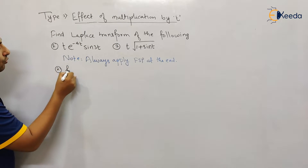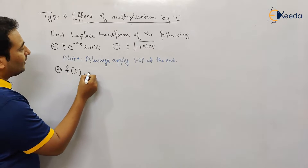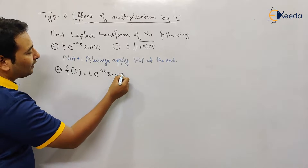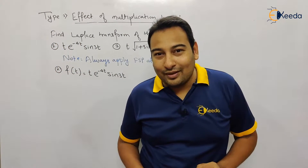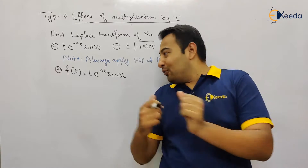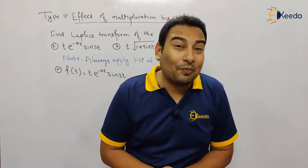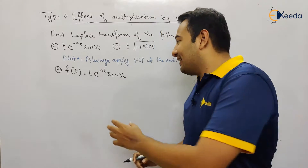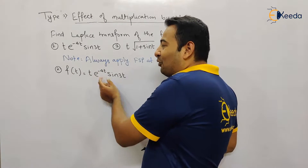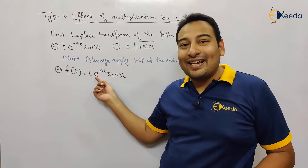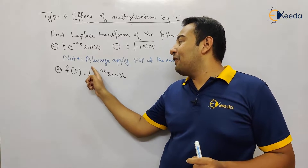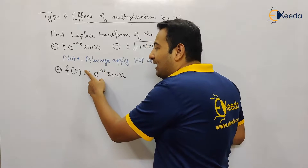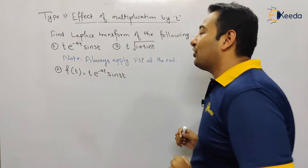In problem number two, our F(t) is t·e^(−4t)·sin(3t). If you observe this problem, which properties can you find? There are actually two properties in the same problem. The exponential part indicates FSP, and the t indicates effect of multiplication by t — so in the same problem we have FSP as well as effect of multiplication by t.